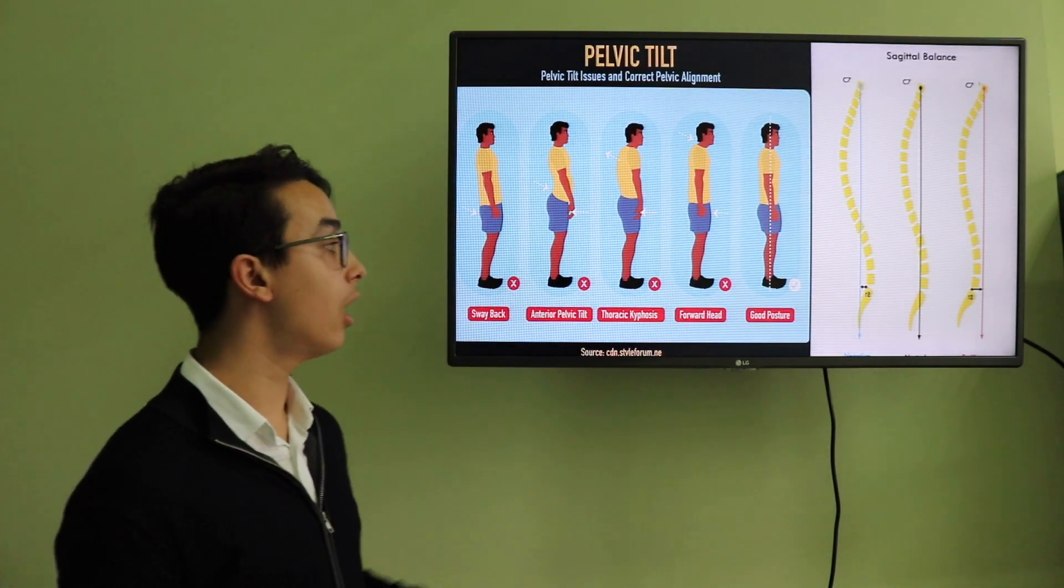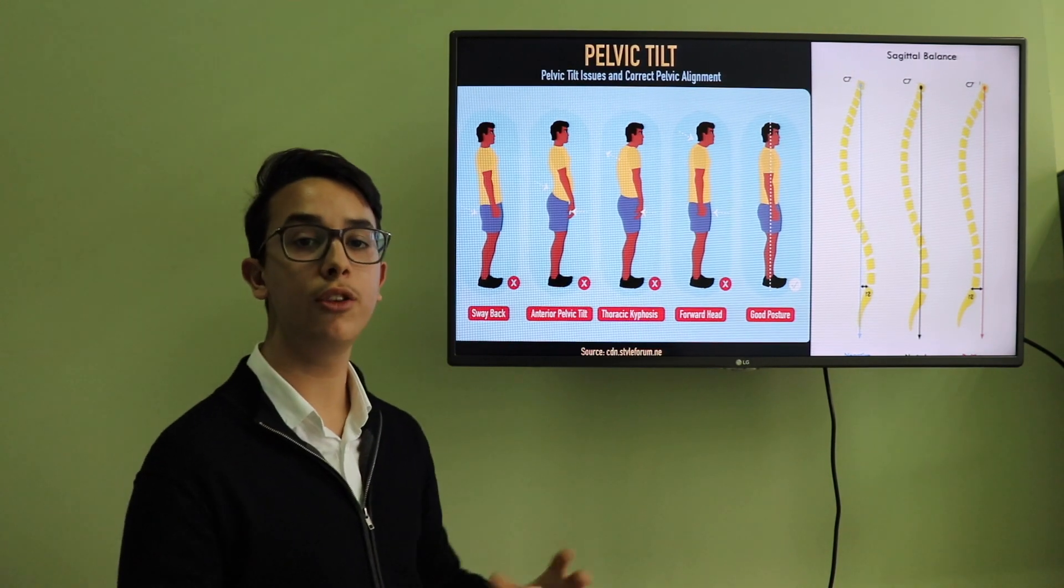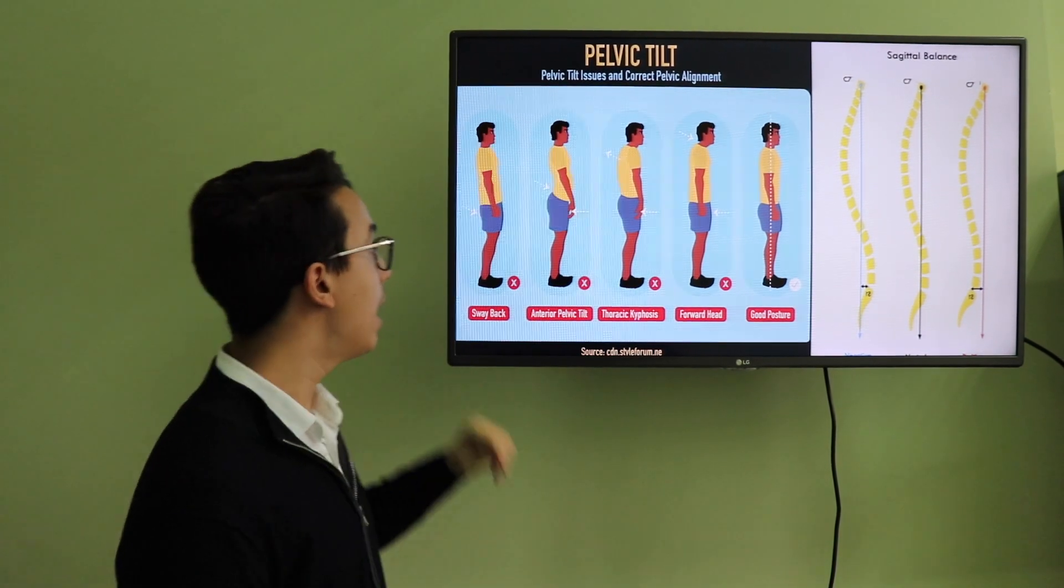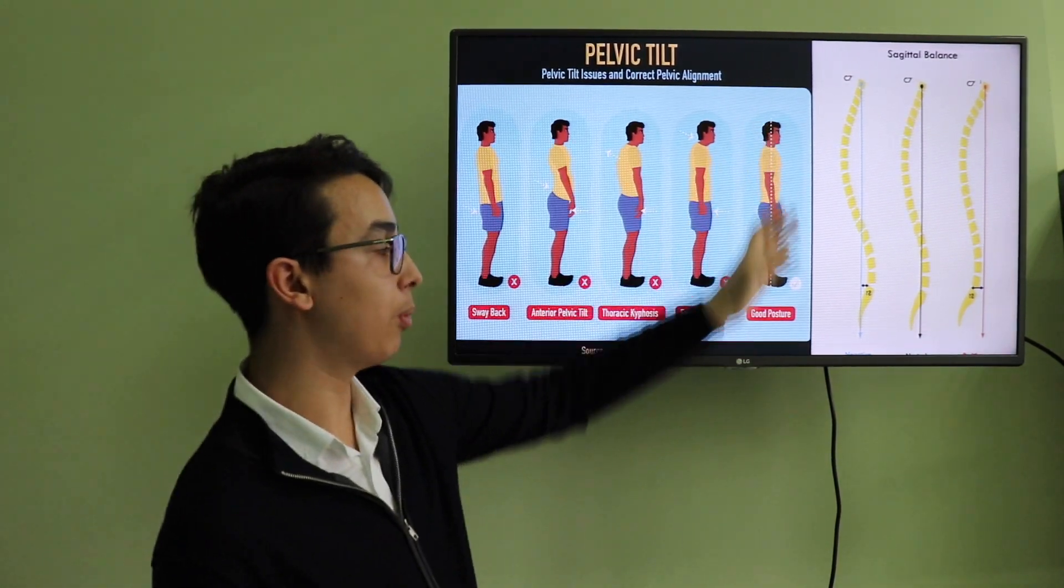The pelvic tilt. How can it affect our body? If you see that these types of bodies have all different types of pelvic tilt, and different types of pelvic tilt cause the body to change. For example, this one is a perfect posture.